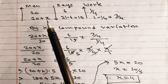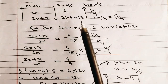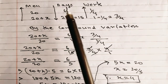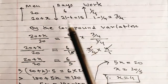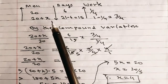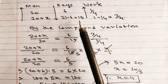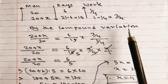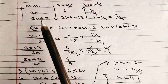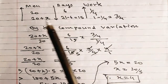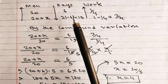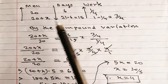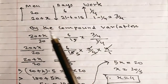Total men (20 + x) need to work 15 remaining days to finish 3/4 of the work. By compound variation, the relationship between men and days is inverse, and the relationship between men and work is direct.